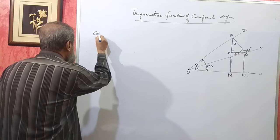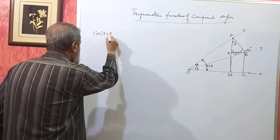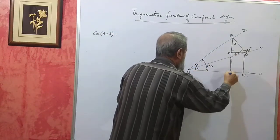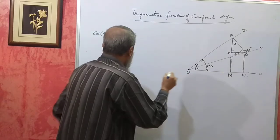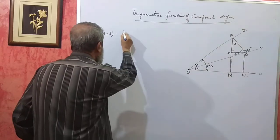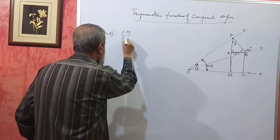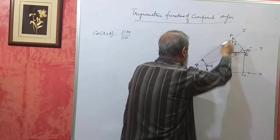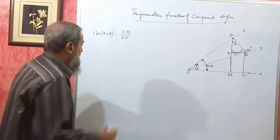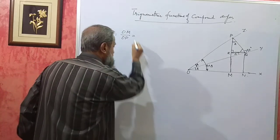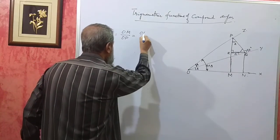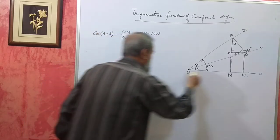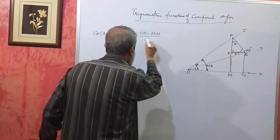Similarly, with the same figure, we can prove geometrically that cos of A plus B is equal to cos A cos B minus sin A sin B. Now, cos(A+B) — cosine is adjacent by hypotenuse, so in triangle OPM the adjacent side is OM divided by OP. OM can be written as ON minus MN, so that gives ON minus MN divided by OP. Now MN is the same as QR, so it becomes ON minus QR divided by OP.